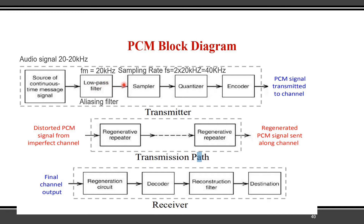The 20 kHz signal is passed to the sampler, which performs the sampling operation — converting the continuous time signal to a discrete time signal. The sampling theorem requires Fs ≥ 2Fm, so 2 × 20 = 40 kHz is the minimum requirement. Then we perform the quantization process: whatever amplitude is present after sampling, it is rounded up using the quantizer. After that we perform the encoding process, and the resultant output is 0s and 1s.